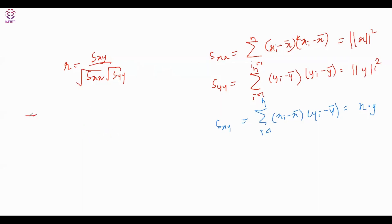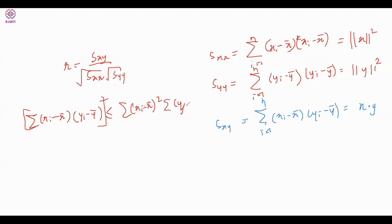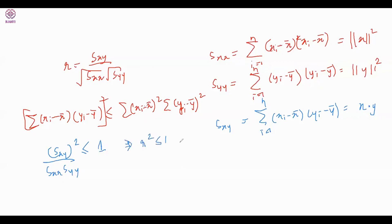Applying Cauchy-Schwarz: [Σ(xᵢ − x̄)(yᵢ − ȳ)]² ≤ Σ(xᵢ − x̄)² · Σ(yᵢ − ȳ)². That gives SXY² / (SXX · SYY) ≤ 1, so r² ≤ 1, meaning |r| ≤ 1, and −1 ≤ r ≤ 1. This completes the proof.